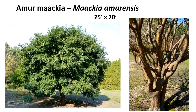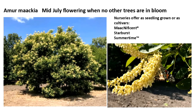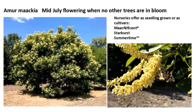I'm always pushing Amur maackia — it's a tree that's just not used in this area and we need to trial it more. It's a small round-headed tree with fantastic orange-papery bark. It sits there in the landscape until mid-July when we have no other trees blooming, and then it bursts into flower with these spike-like flowers. If you have an interest in native pollinators — bumblebees, butterflies — they swarm this tree by the thousands. When nothing else is blooming in mid-July to early August, Amur maackia is blooming. Cultivars include Starburst.